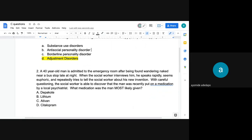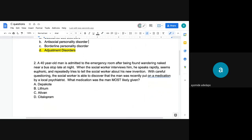So next question is, a 40-year-old man is admitted to the emergency room after being found wandering naked near a bus stop late at night. When the social worker interviews him, he speaks rapidly, seemed euphoric, and repeatedly tries to tell the social worker about his new invention. With careful questioning, the social worker is able to discover that the man was recently put on a medication by a local psychiatrist. What medication was the man most likely given?